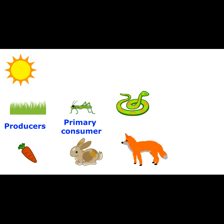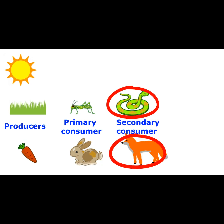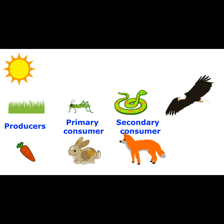The organisms in the third link of any food chain are called secondary consumers. And finally, some food chains have tertiary consumers.